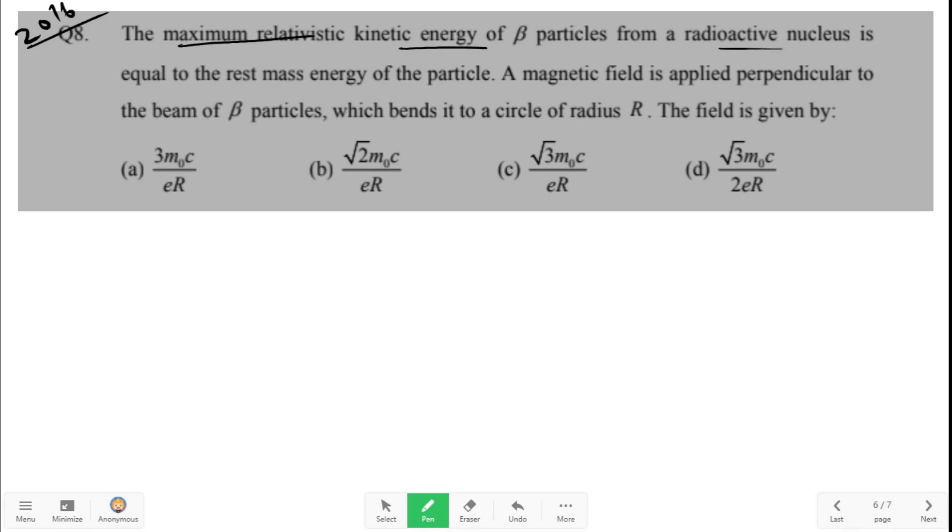So it is given kinetic energy is equal to m₀c² rest mass energy. Here m₀ is the rest mass. Now a magnetic field is applied perpendicular to beam of beta particles which bends it to a circle of radius R.